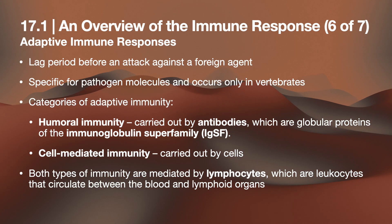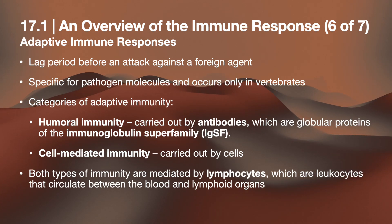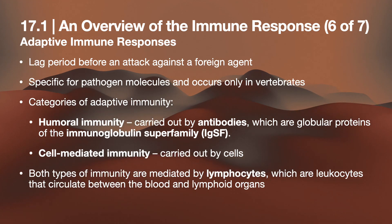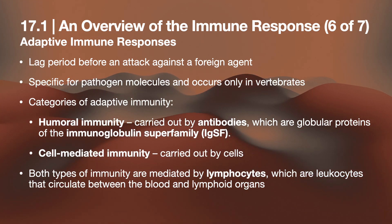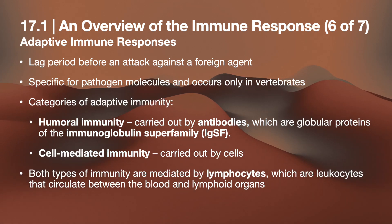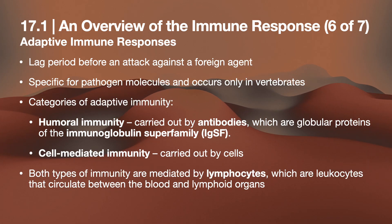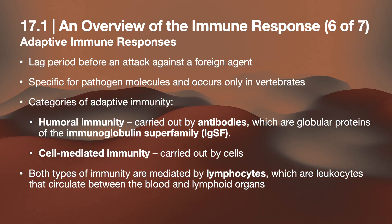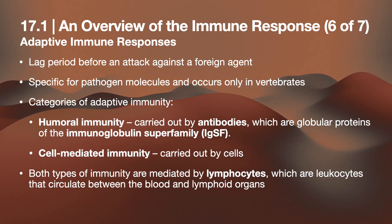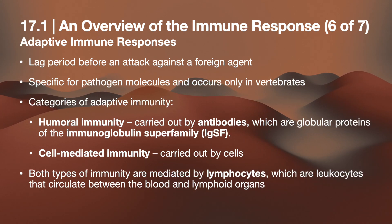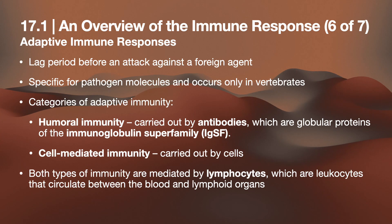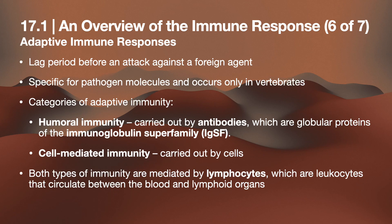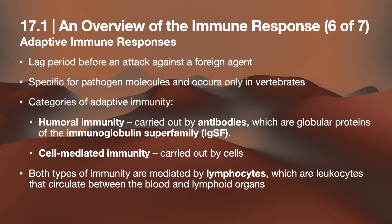For adaptive immune responses, there is a lag period before an attack against a foreign agent. The response is highly specific for pathogen molecules and occurs only in vertebrates. There are two categories: humoral immunity, carried out by antibodies which are globular proteins of the immunoglobulin superfamily (IgSF), and cell-mediated immunity, carried out by cells. Both types of immunity are mediated by lymphocytes.